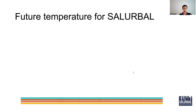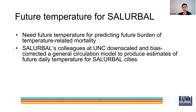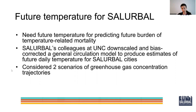That concludes the description of the historical data in Solar Bell, and now I'll talk about the future temperature data. One of the goals of Solar Bell is to estimate the future burden of temperature-related mortality for some point in the future, such as the mid-century. In order to do that, we need projected temperature data for the future time period. Our colleagues at UNC downscaled and bias-corrected a general circulation model to produce estimates of future daily temperature for Solar Bell cities. This downscaling and bias correction was done while taking into account two different concentration scenarios of global greenhouse gases.